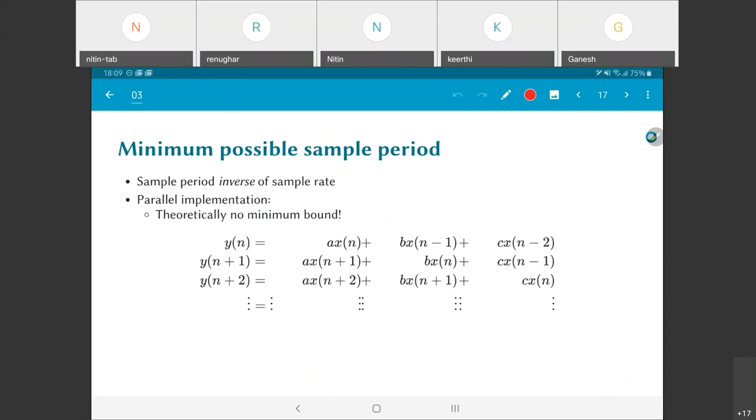Look at this equation. Let's say I have a simple filter y(n) equals A·x(n) + B·x(n-1) + C·x(n-2). I can then compute y(n+1) in terms of x(n+1), x(n), and x(n-1). If I used three separate multipliers for that as opposed to what was used for y(n), then both y(n) and y(n+1) could have been done in principle at least in parallel with each other.